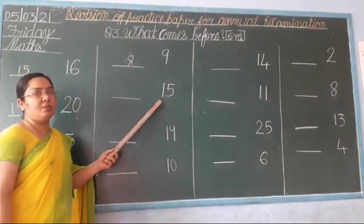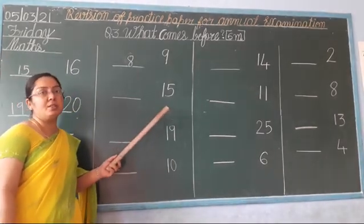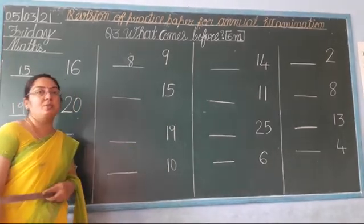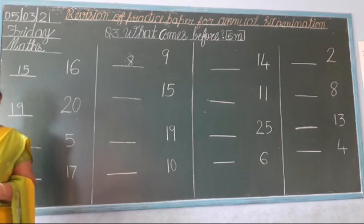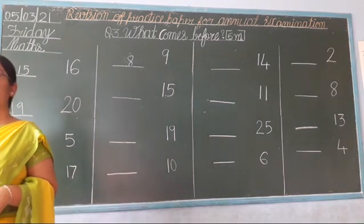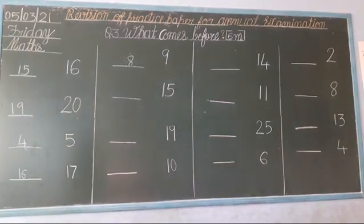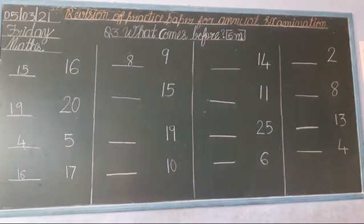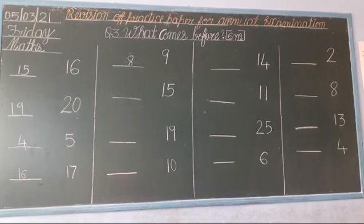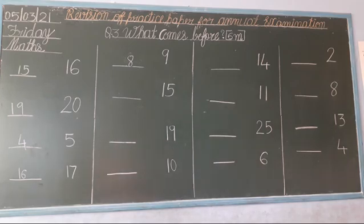Which number is this? 1, 5 — 15. Yes. So you speak: 11, 12, 13, 14, 15. Which number comes before? 1, 4 — 14. So you write here: 14.